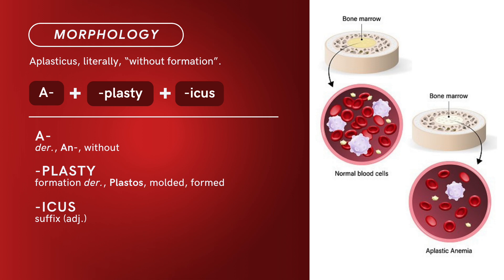Compound of A plus plasti plus icus. A is derived from 'an,' meaning without. Plasti means formation, derived from plastus, meaning molded or formed. Icus is a suffix that denotes adjective. Compound term: Aplastic Anemia.